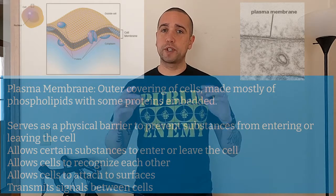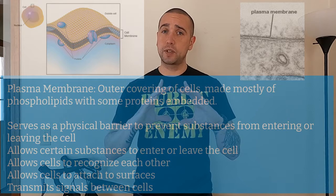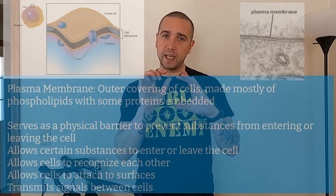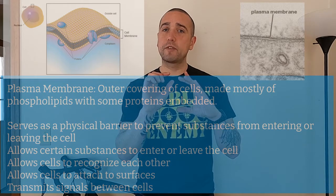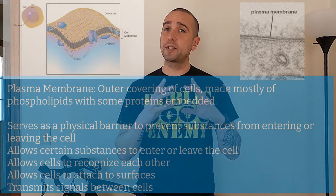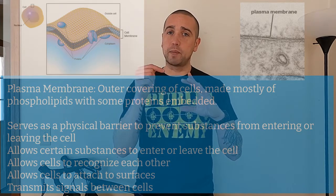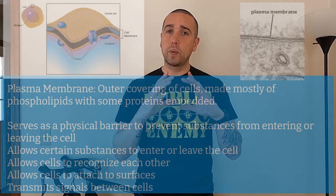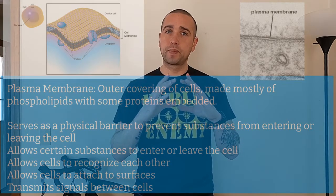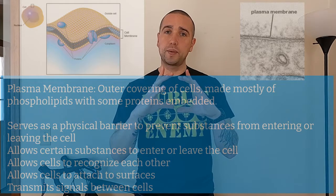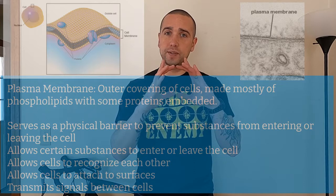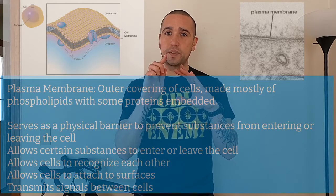Just like your skin, it helps protect the cell — it's a physical barrier from things getting inside. The proteins embedded in the plasma membrane have different functions: they help cells recognize each other, attach to things, let molecules in and out, or transmit signals. The plasma membrane can also scoop things in, called endocytosis, or let substances out, called exocytosis.